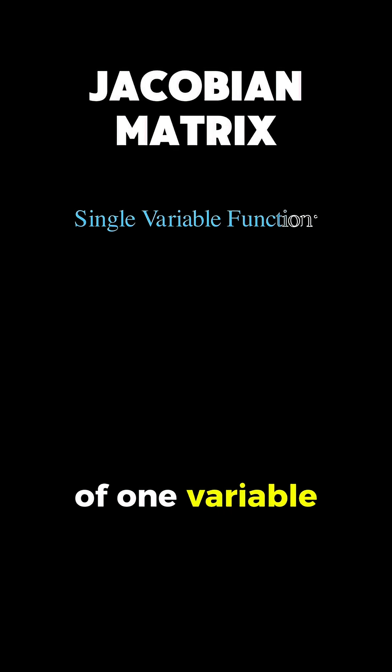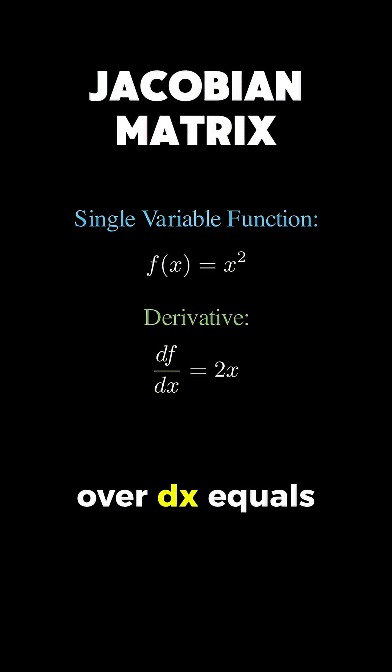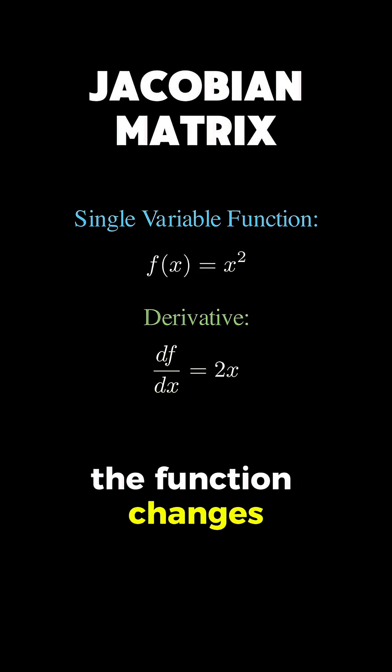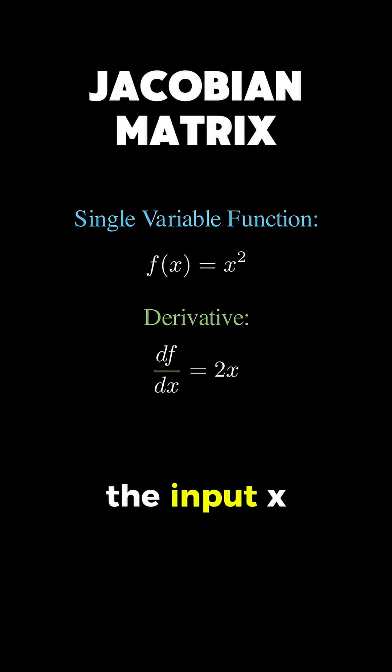A simple function of one variable where f equals x squared. When we take the derivative of this function, we get df over dx equals 2x, which represents how the function changes as we vary the input x.